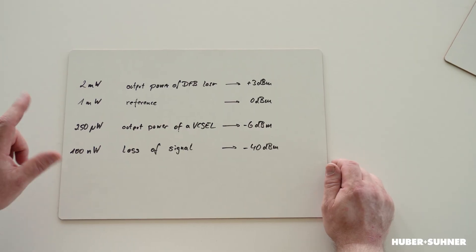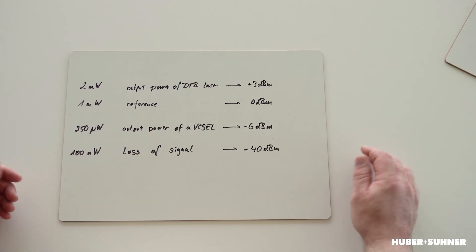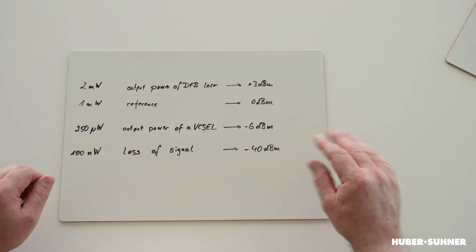As you can easily see, this is a large range of numbers, so it's not that easy to keep an overview and to handle them. And for that, there was the idea of implementing a logarithmic scale.